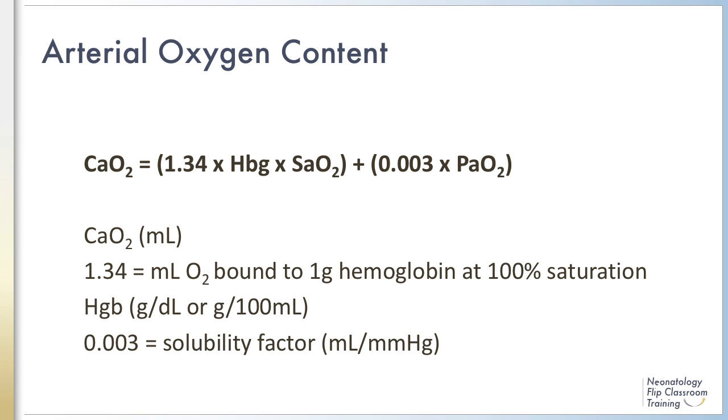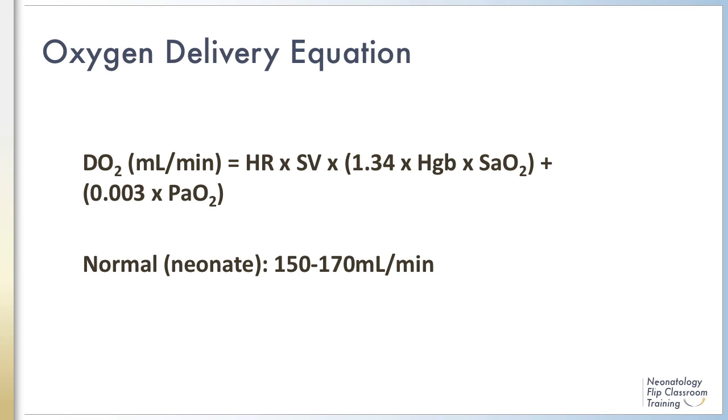A reminder that this is the formula for arterial oxygen content, which we covered in a previous module. I will only briefly remind you that it is 1.34 times hemoglobin times the saturation. Make sure you watch your units on the hemoglobin here, times the amount of oxygen that is dissolved in the blood, which is 0.003 times the PaO2. Putting this into the oxygen delivery equation, we get the heart rate times the stroke volume times 1.34 times the hemoglobin times the saturation plus 0.003 times the PaO2.